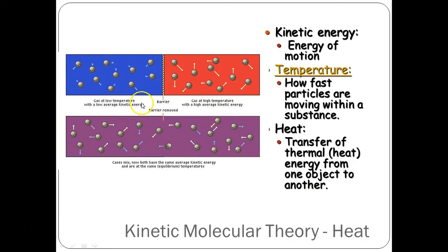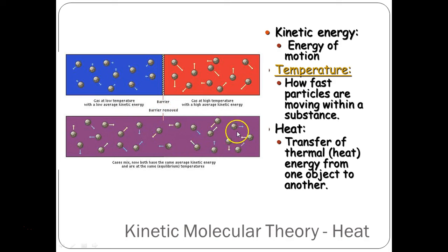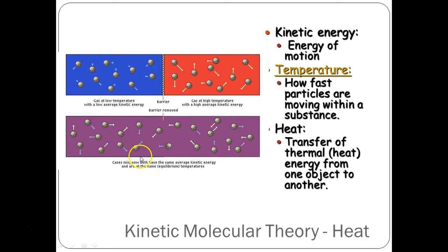We can take a look at this diagram. On the blue side, the particles have very small arrows — vectors — meaning they are moving pretty slow at a low temperature. On the warmer red side, the arrows are a lot bigger; the particles are moving much faster because of the higher temperature. When we remove the barrier, we see an energy transfer take place. The thermal energy from the red side is transferred into the colder particles on the left. Eventually it levels out — all the arrows are the same — and both sides have the same average kinetic energy and are at the same temperature.